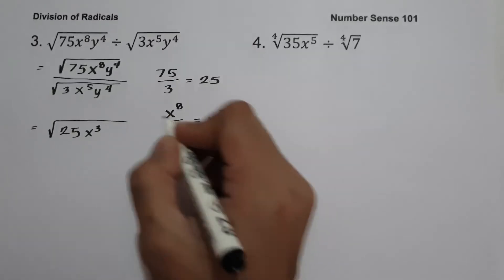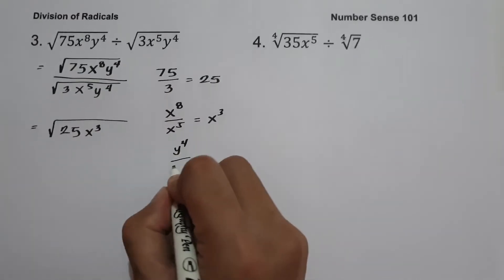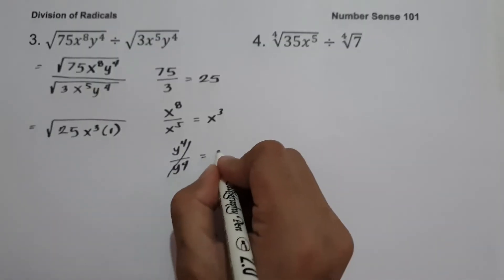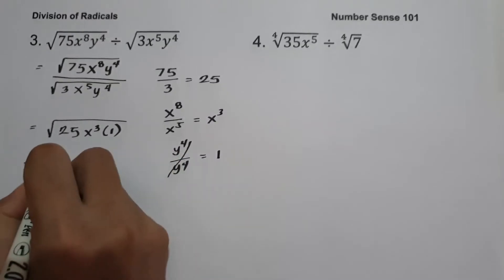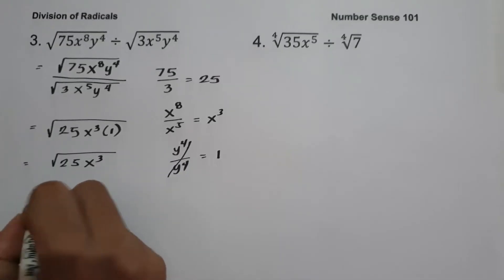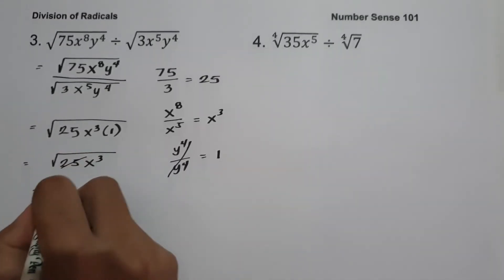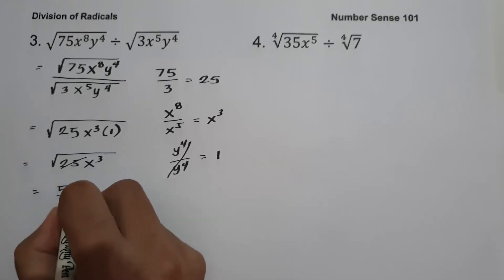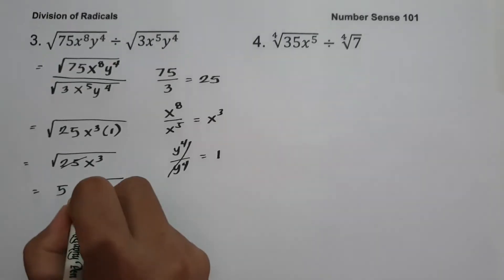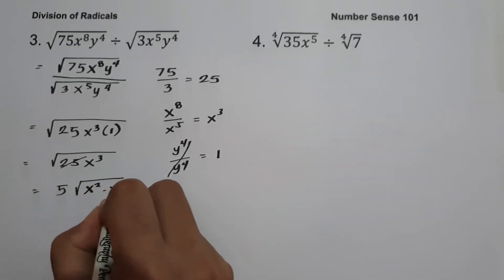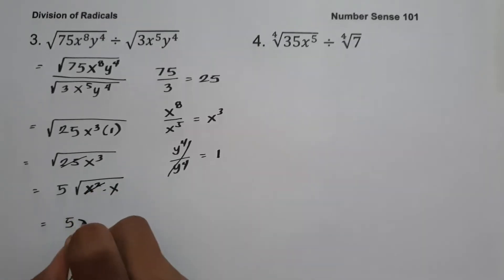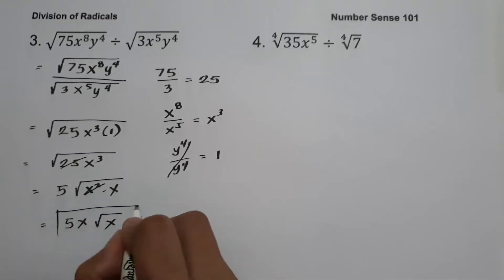And y raised to 4 divided by y raised to 4 cancels out to 1, so this becomes 25 times 1, which is 25x cubed. To simplify, the square root of 25 is 5. Dividing the exponent by 2 gives x squared and x. So we have 5, square root of x squared is x, and we have square root of x. This will be our answer.